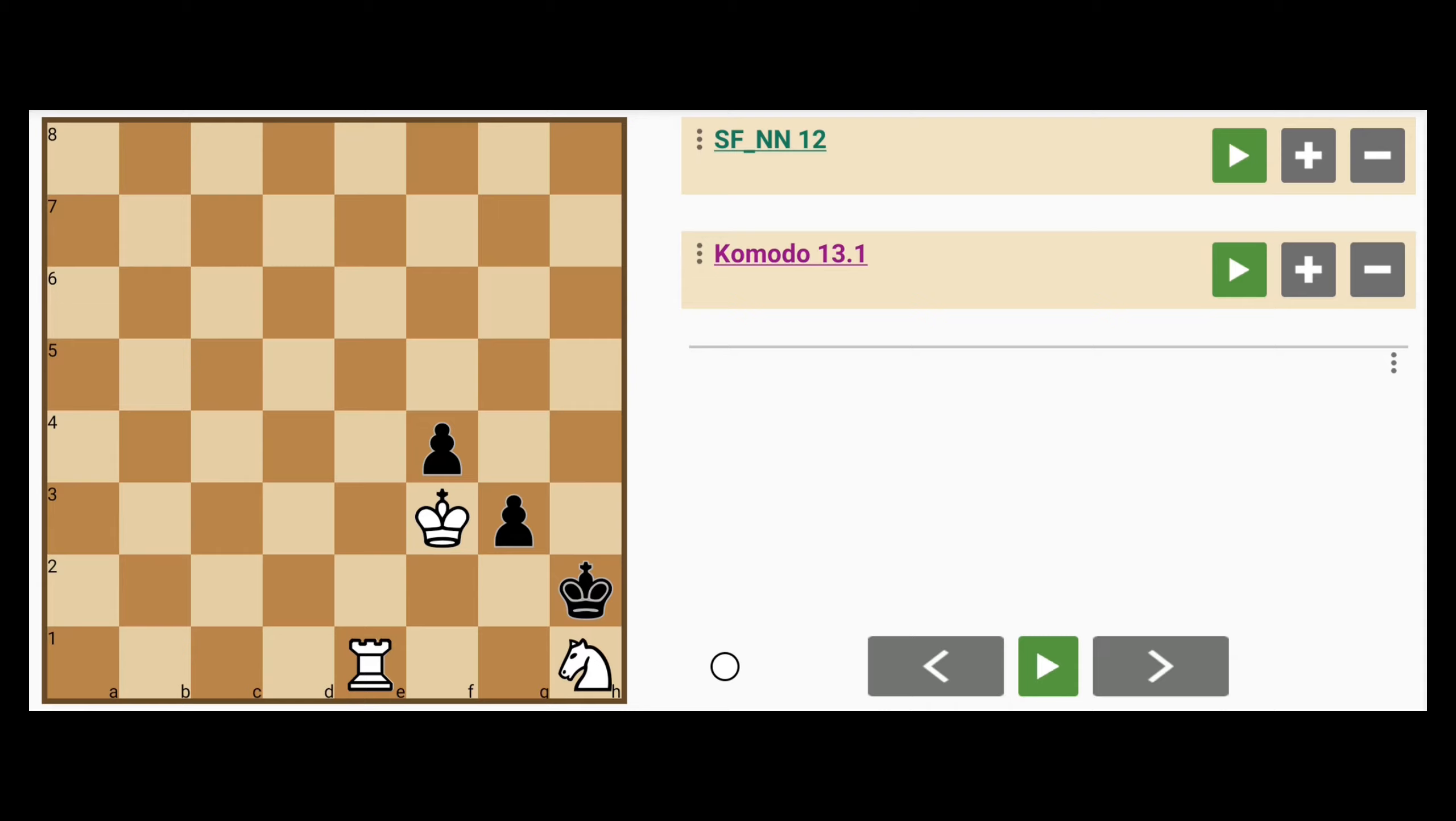For instance, knight captures g3, a knight sacrifice. F captures g3, rook to e2, king to h3, rook to g2.